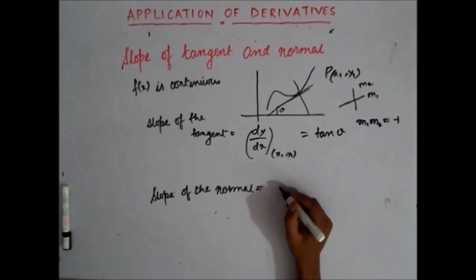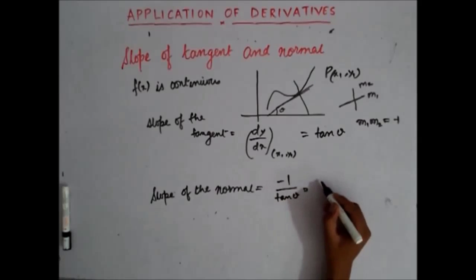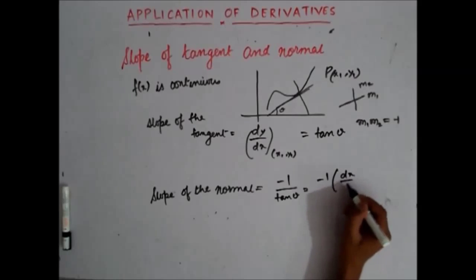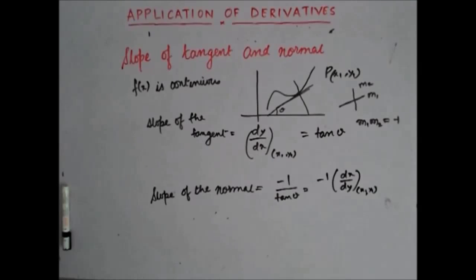Now, since the normal is perpendicular to the tangent, the slope of the normal will be minus one by tan theta, or minus one by dy/dx, which equals minus one times dx/dy at (x1, y1). This is how we define the slope of tangent and normal.